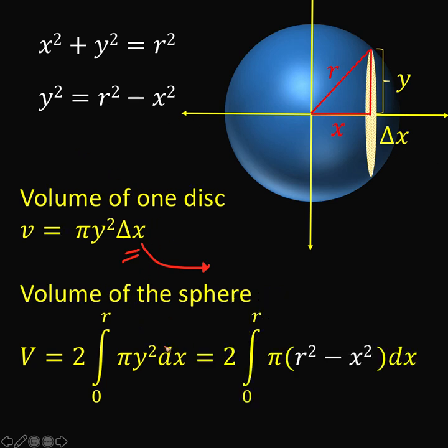And since y squared is equal to r squared minus x squared, then we can now replace this y squared with r squared minus x squared. All the rest are just copied. We copy the 2. We copy the integral from 0 to r. We copy the pi. We copy dx. And change y squared with r squared minus x squared. And we replace this delta x with the differential dx.